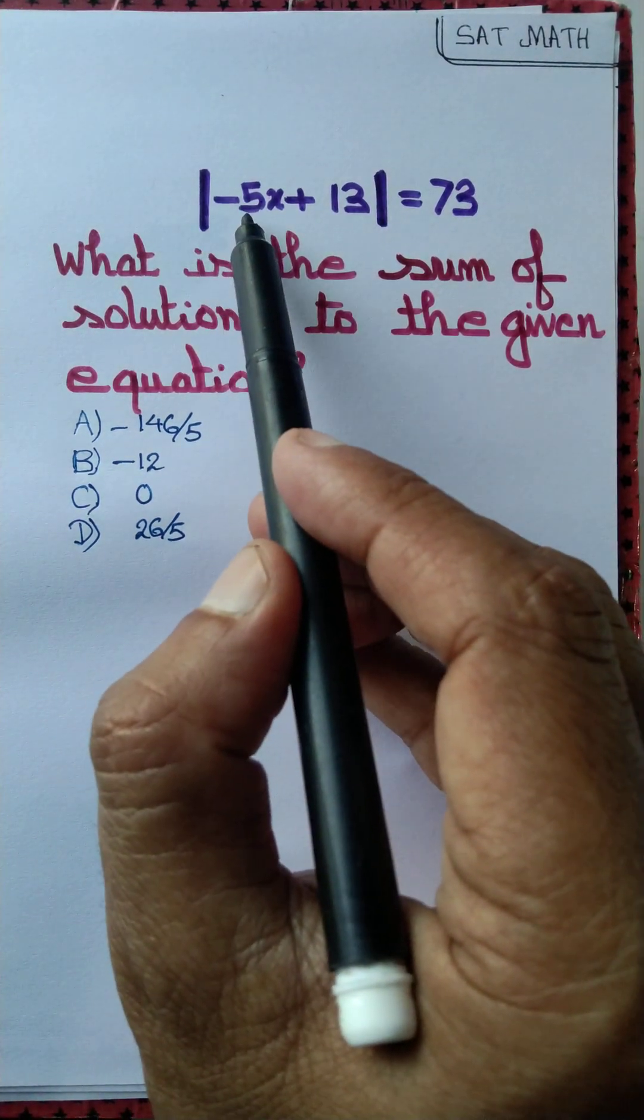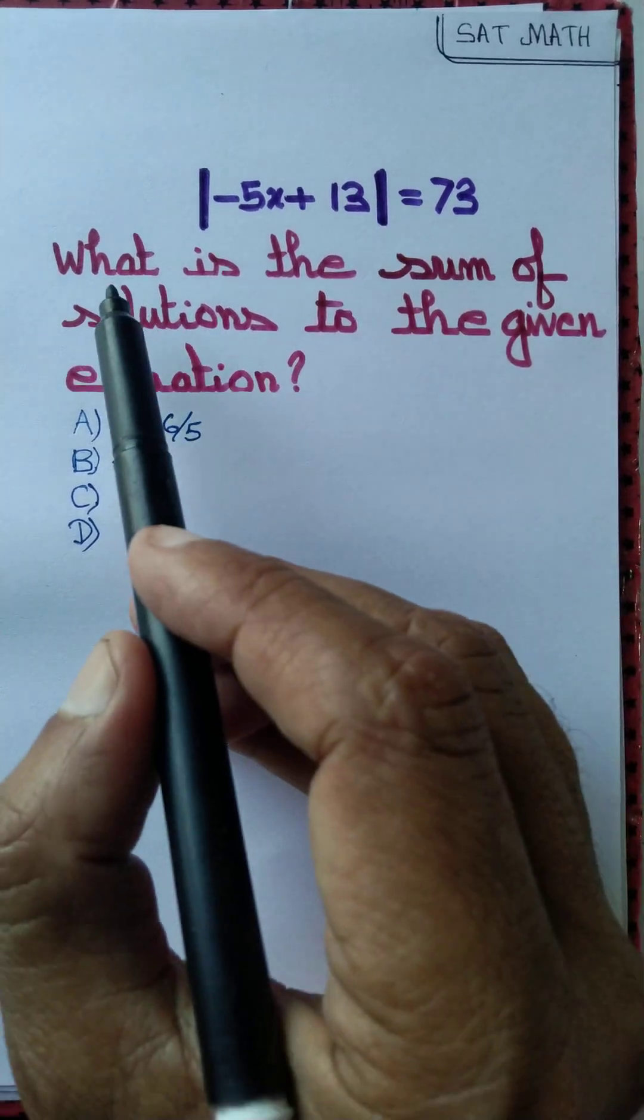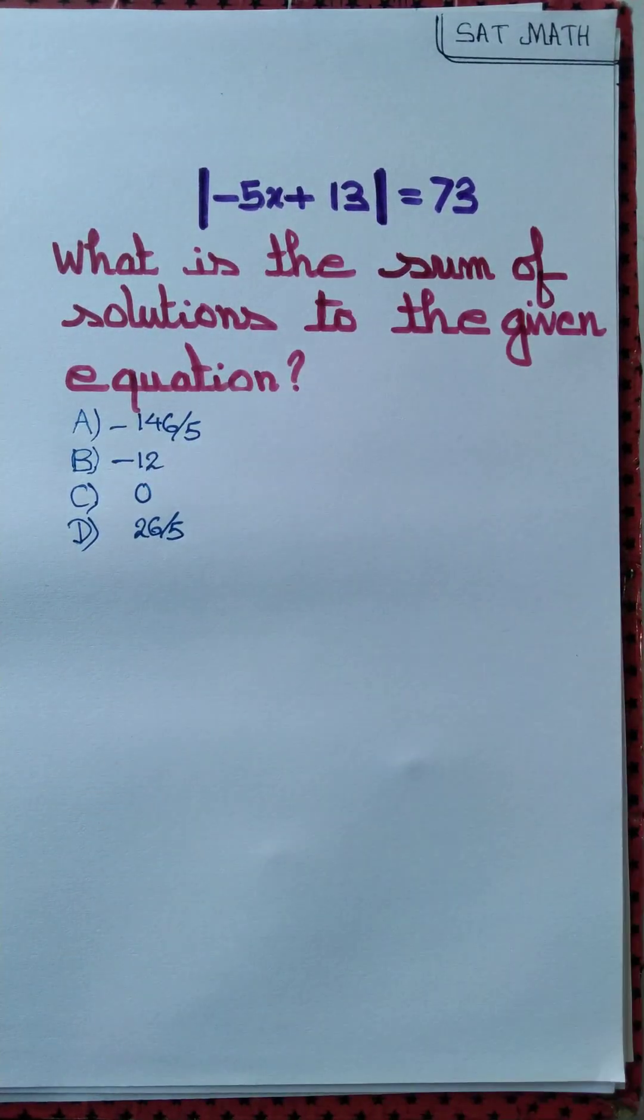We got the equation modulus of minus 5x plus 13 equal to 73, and the question is what is the sum of solutions to the given equation.